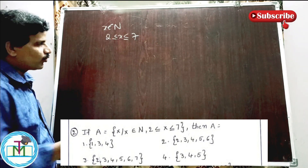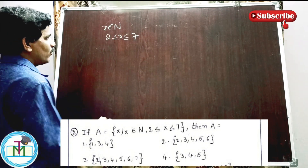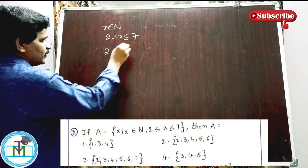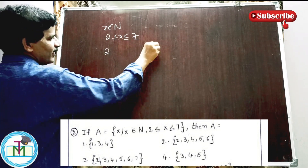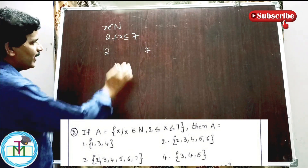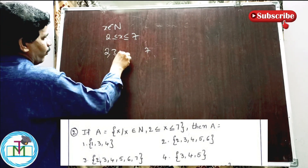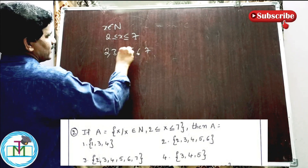This question is 2 less than or equal to x less than or equal to 7. Since both ends are included, we include 2, 3, 4, 5, 6, 7.